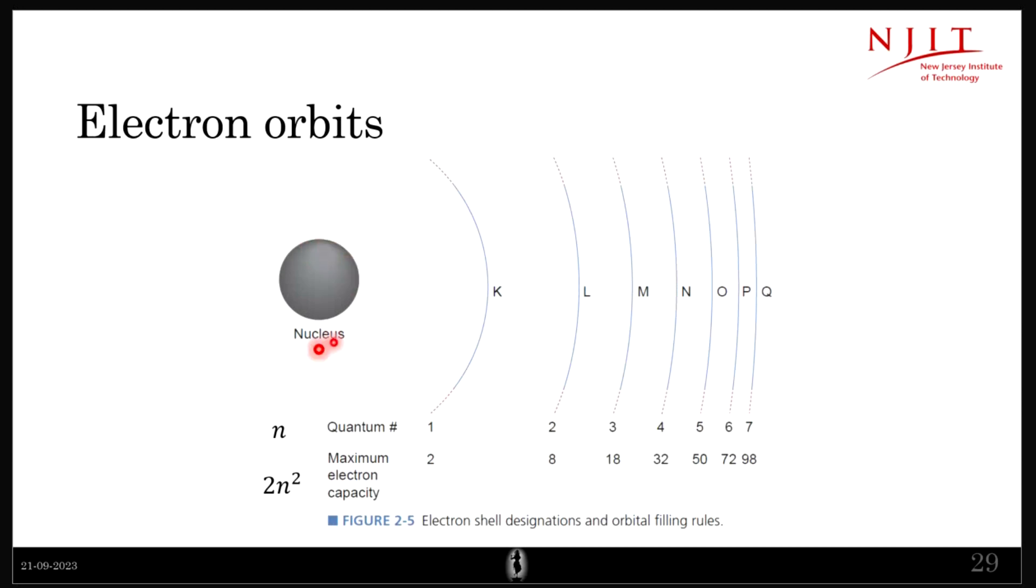Okay, so electron orbits. This is the nucleus. It has different orbits, so they are named as K, L, M, N, O, and you can go till S depending upon how many electrons the element has. And at every orbit there is a fixed number of electrons that can be there. Again, this is probabilistic. So the probability of having two electrons in the K shell or the K orbit is the highest. So it's more likely, or the most likely, for two electrons to be present in this particular orbit. Again, there is this formula 2n², so this is the orbit number or the quantum orbit number: 1, 2, 3, 4.